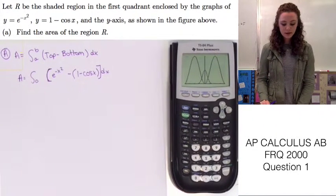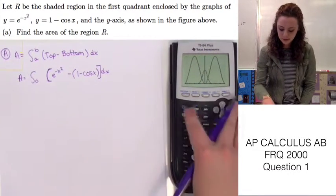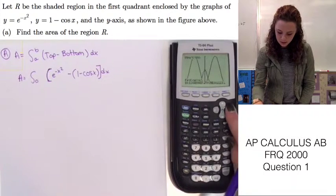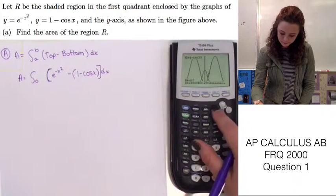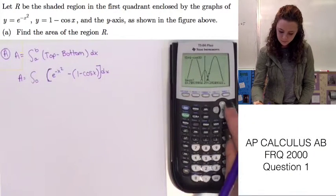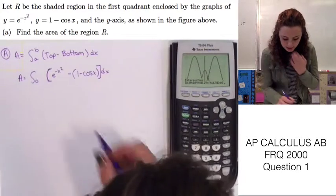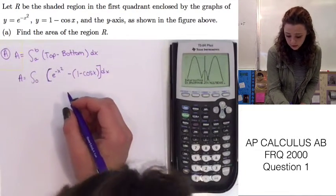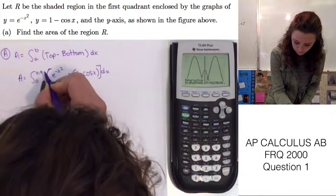Now let's use the calculation function to find the intersection of the two graphs in order to find the upper limit. So second trace and intersect, select your first curve and then your second curve and now it gives us that our x value where they intersect is 0.942.